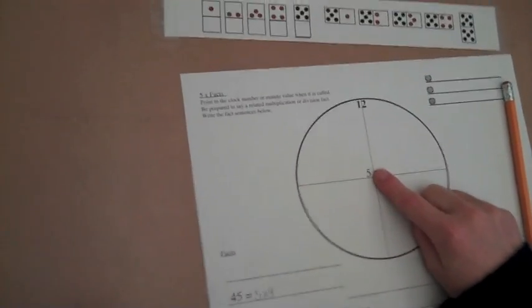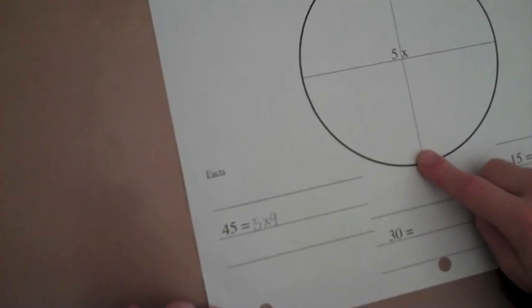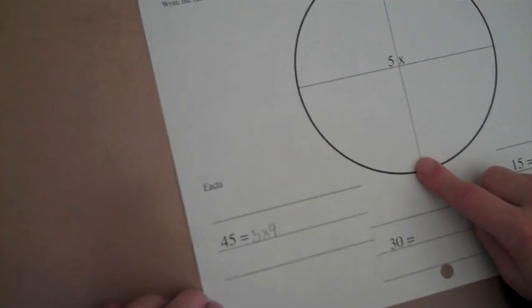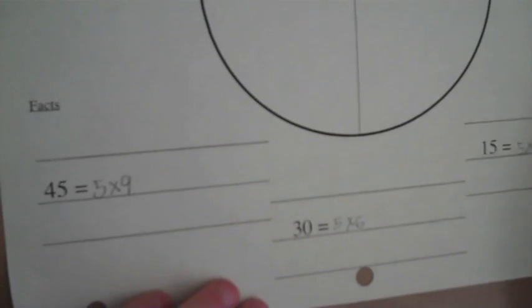Fingers to the center, drag straight down to the 30. What number's there, everybody? 6. Beautiful. Let's get your pencil. Let's get that fact in. 30 equals? 6. 5 times? 6. Nice job.